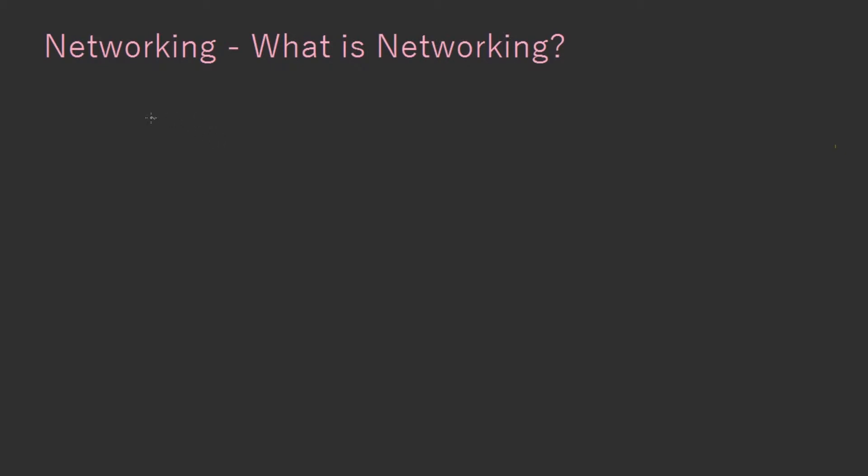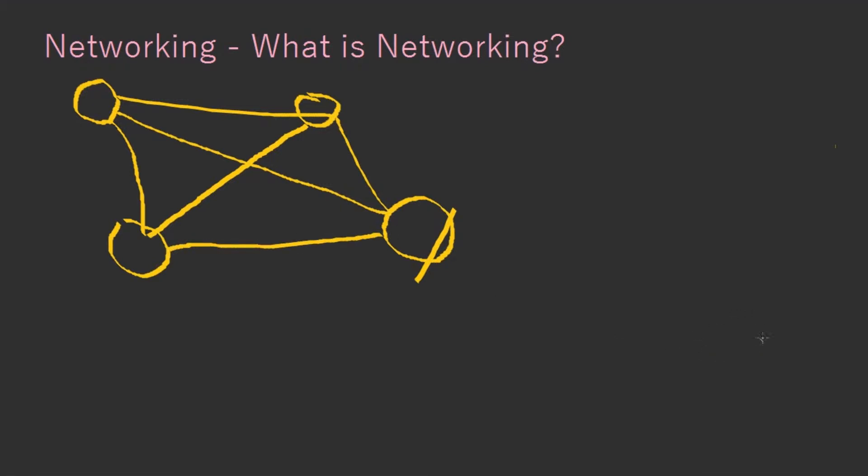For example, these circles are computers. Here we have another one, here we have another one, and maybe over here we have one too. Then what they do is they are linked together. All of them are linked together and everyone is extremely happy.